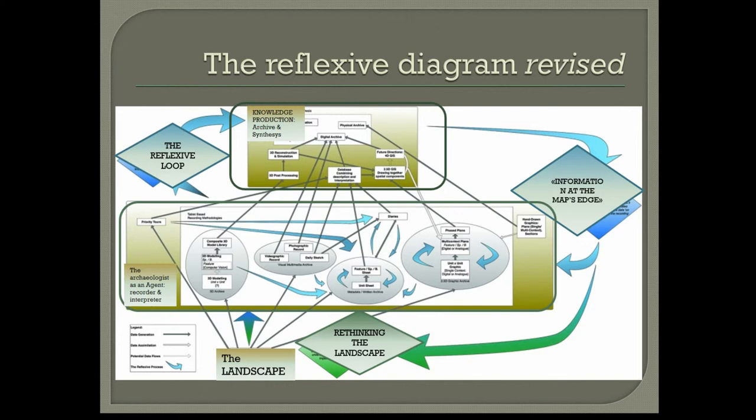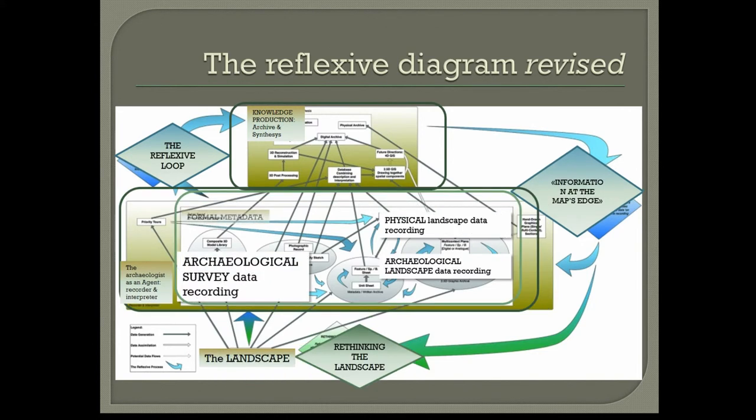We would need to include in the process both formal metadata and contextual metadata, which define measurements and categorization, but which can assist understanding. For example, surface visibility has a strong influence on results. Similarly, knowledge of local ceramic sequences is incredibly variable and profoundly affects the ability to date material and on-site and off-site activities.